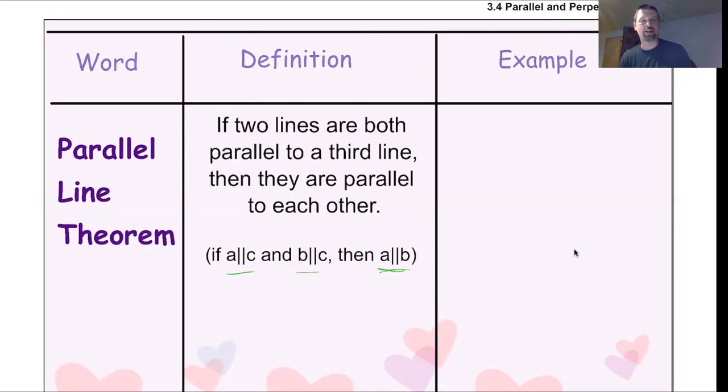But the biggest thing with these theorems and problems is just actually do a sketch. It'll make it so much easier. So for instance, if I know A is parallel to C, there's A, C, they're parallel, and B is also parallel to C, well then B would have to be the same direction, that'd be parallel. Then A and B are parallel. So yeah, clearly this one and that one, those are also parallel as well. So that's all it is. If you've got two lines that are parallel to a third, then all three lines are parallel to each other.